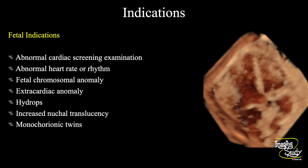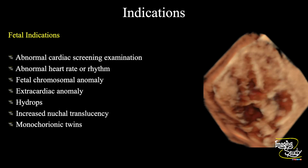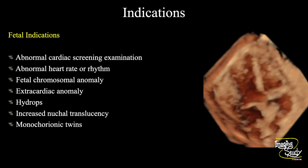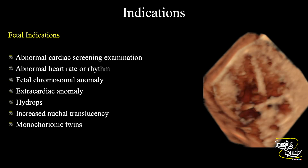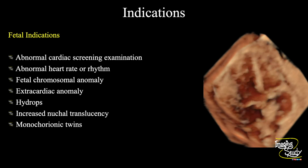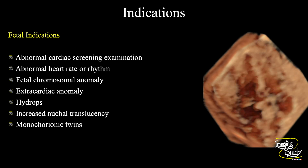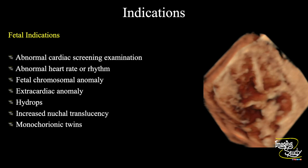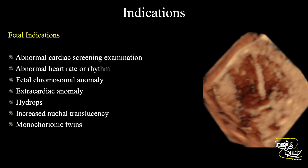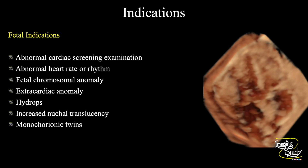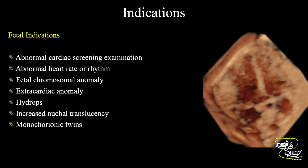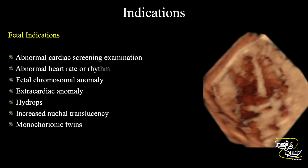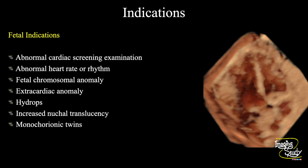In case of fetal hydrops I usually search for two things: cardiac anomaly and fetal anemia. If you see any increased nuchal translucency in the first trimester scan, you should routinely search for fetal cardiac abnormality even before 18 weeks with transvaginal ultrasound. In case of twin pregnancies, especially monochorionic twins, you should go with fetal echocardiography.